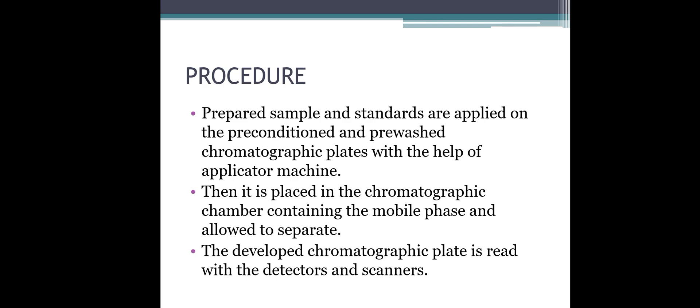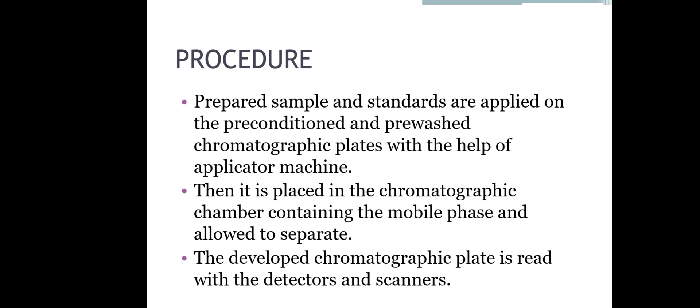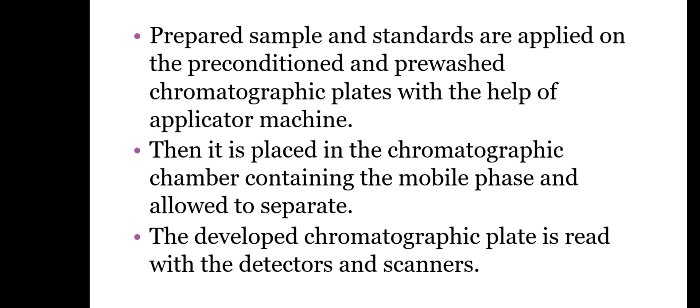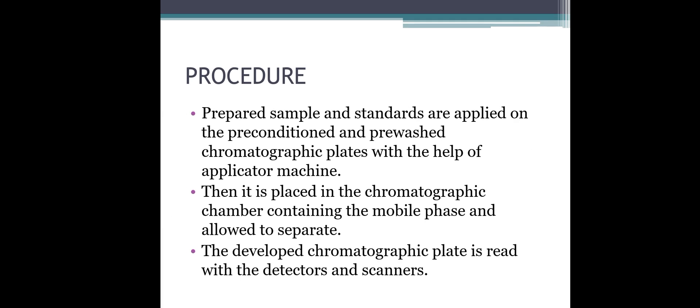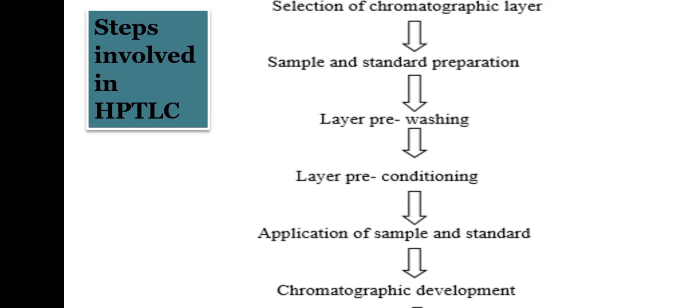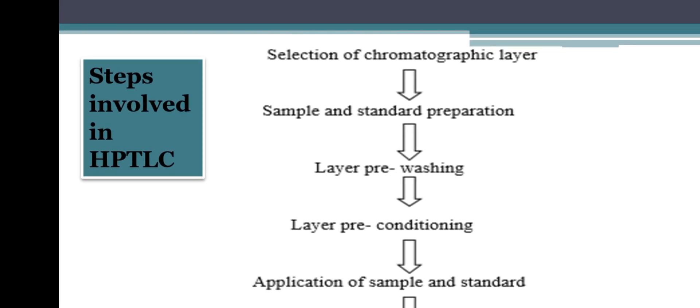The procedure of HPTLC: first, prepared samples and standards are applied on preconditioned and pre-washed chromatographic plates using an applicator machine. Then the plate is placed in a chromatographic chamber containing the mobile phase and allowed to separate. The developed chromatographic plate is then read with a detector and scanner.